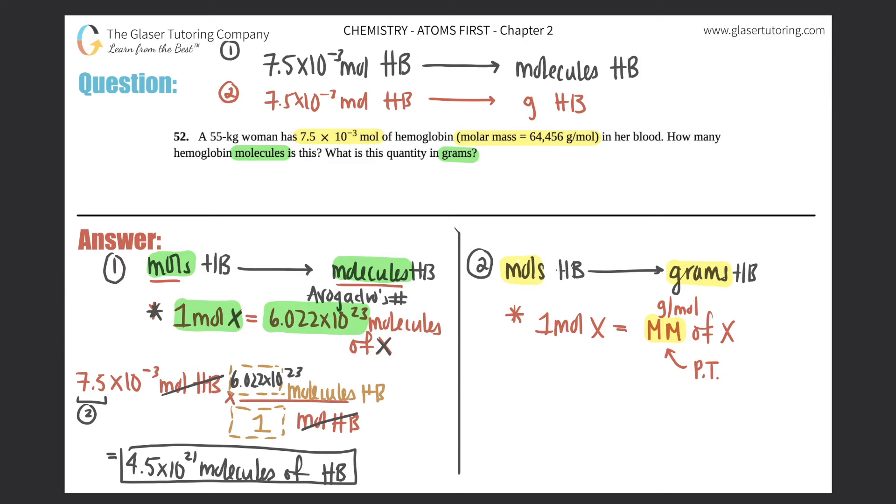So let's start with what we're given. 7.5 times 10 to the negative 3 moles of hemoglobin times by a ratio, mole of hemoglobin on the bottom, gram of hemoglobin up top. And what are the numbers between these two parts of the ratio? Well, one mole. So obviously we have to put one mole here.